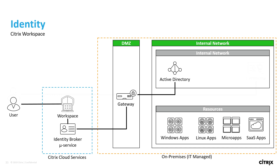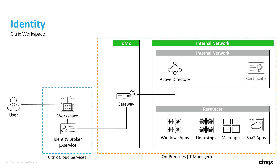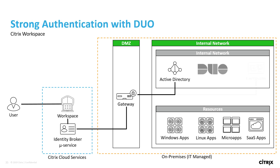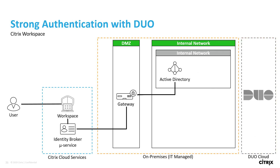This type of deployment provides similar capabilities to a completely on-premises deployment, where we can use gateway to provide user authentication with Active Directory, Active Directory with RADIUS, Active Directory with certificates, and even Active Directory with Duo. However, Duo is a cloud-based service, so what we end up doing is installing a Duo proxy within an internal network, which then links back to our organization's Duo subscription.